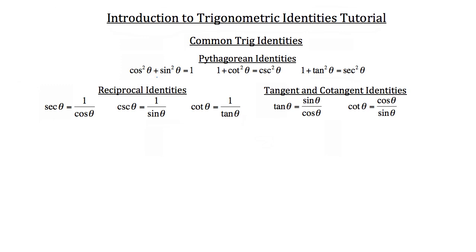For example, in the first statement, if you had the cosine squared theta plus sine squared theta, that will always be equal to one. And one is also equal to the cosine squared theta plus sine squared theta. Now you can rearrange these identities if you need to.